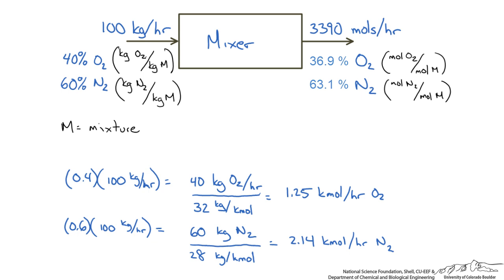Another way to reduce the amount of steps and work is to calculate the average molecular weight of the mixture. If we take that average molecular weight and use it with the incoming mass flow rate, we could easily calculate the outgoing molar flow rate and then look at the composition.